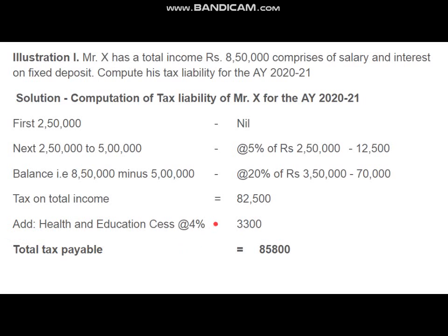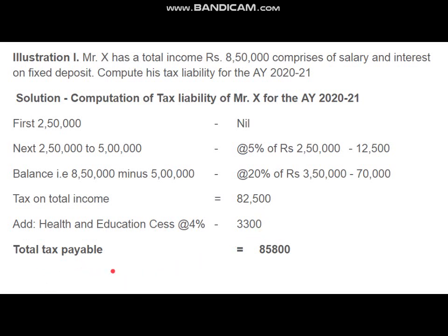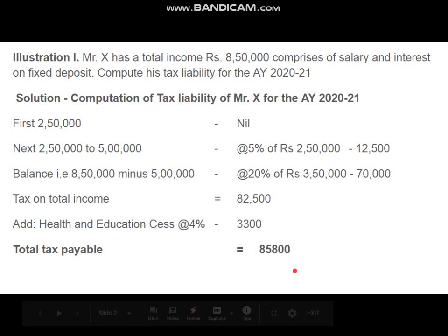The tax on total income is 12,500 plus 70,000, that is 82,500. Add health and education cess at the rate of 4 percent, which is 3,300. Health and education cess is applicable to every assessee and is computed as a percentage of the tax liability. So the total tax payable by Mr. X for the assessment year 2020-21 is 85,800.